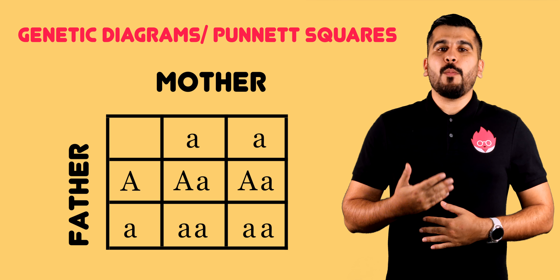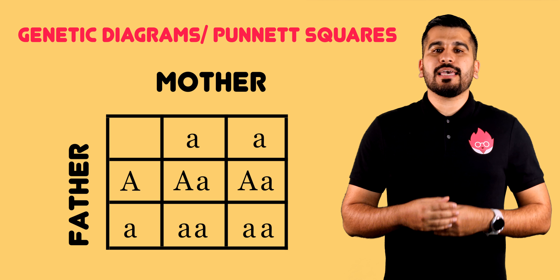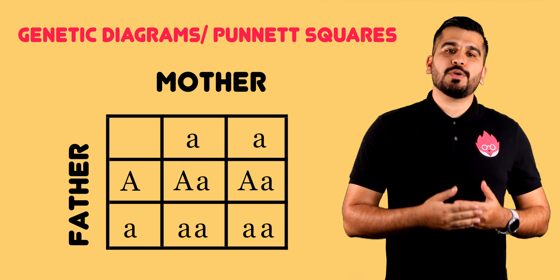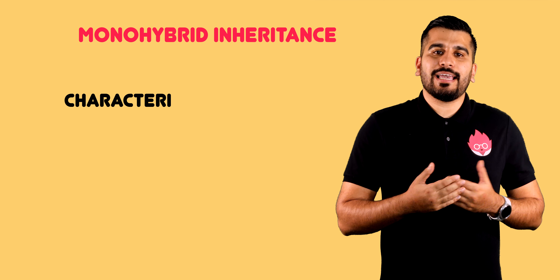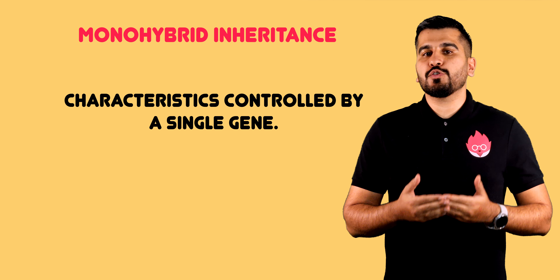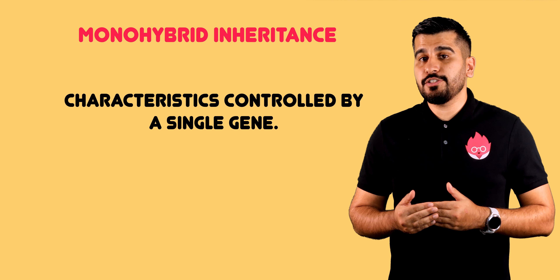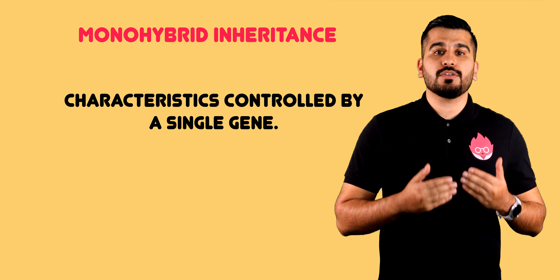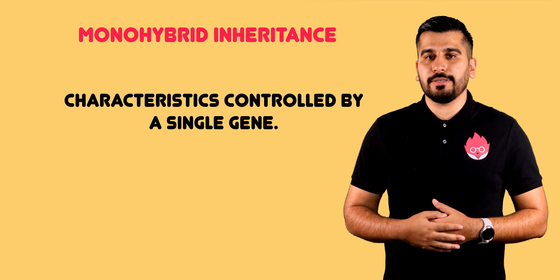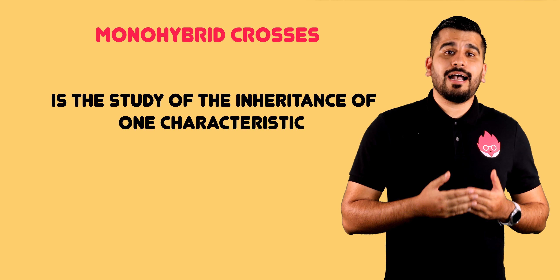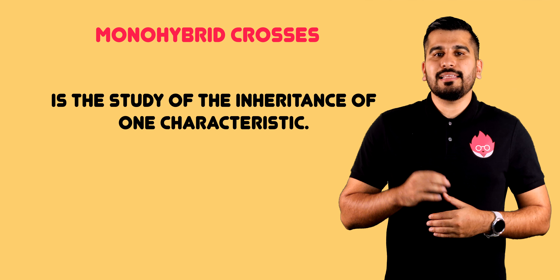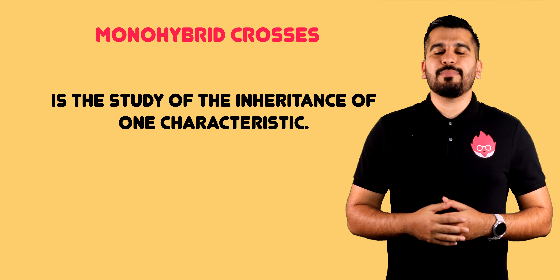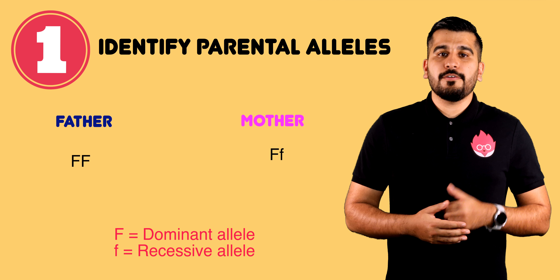Genetic diagrams or Punnett squares can be used to show monohybrid inheritance, where characteristics controlled by a single gene are passed on to offspring. Let us look at how you draw a Punnett square and then look at some exam examples.